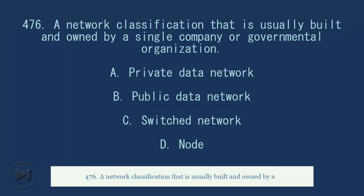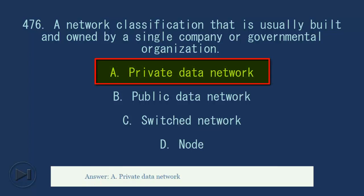476. A network classification that is usually built and owned by a single company or governmental organization. A. Private data network. B. Public data network. C. Switched network. D. Node. Answer, A. Private data network.